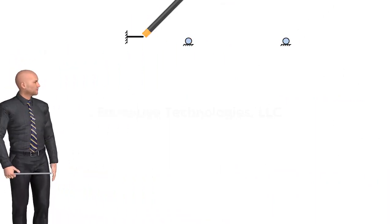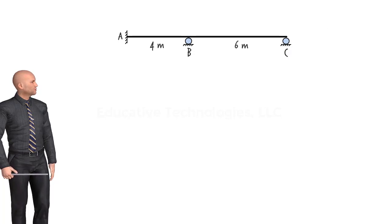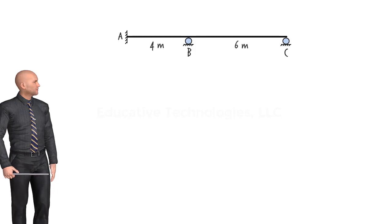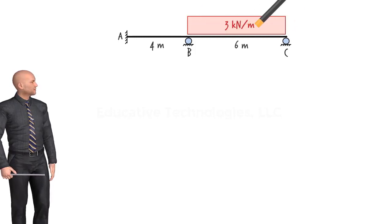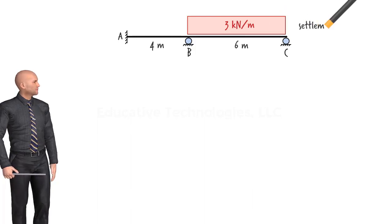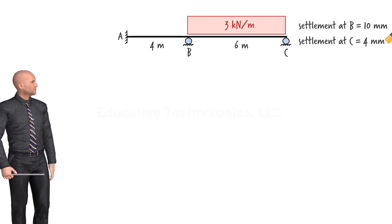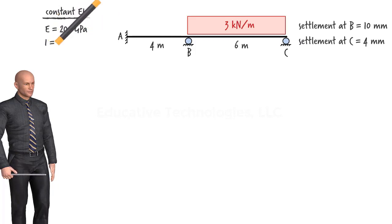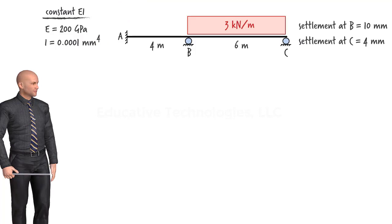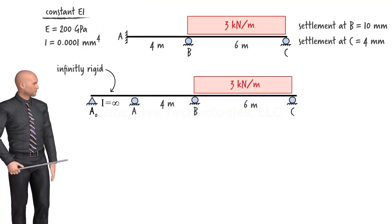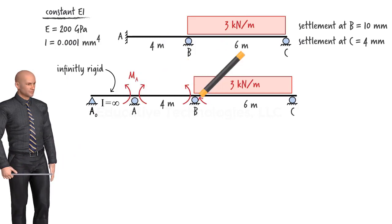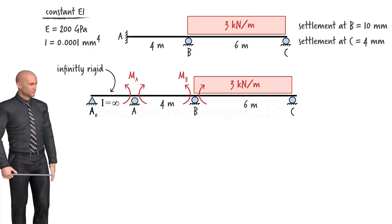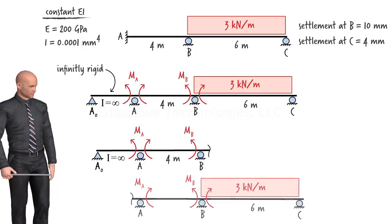We wrap up this lecture with another example. This two-span beam is fixed at the left end and rests on two roller supports at B and C. The beam carries a uniformly distributed load of 3 kilonewtons per meter and has settled at B and C. The downward settlement at B is 10 millimeters, while at C it is 4 millimeters. We wish to determine the support reactions due to the load and settlements. We start by replacing the fixed end at A with a fictitious beam segment of infinite rigidity. Since the revised beam has three spans, we need to write two three-moment equations — one for the first two spans, and another for the last two spans.